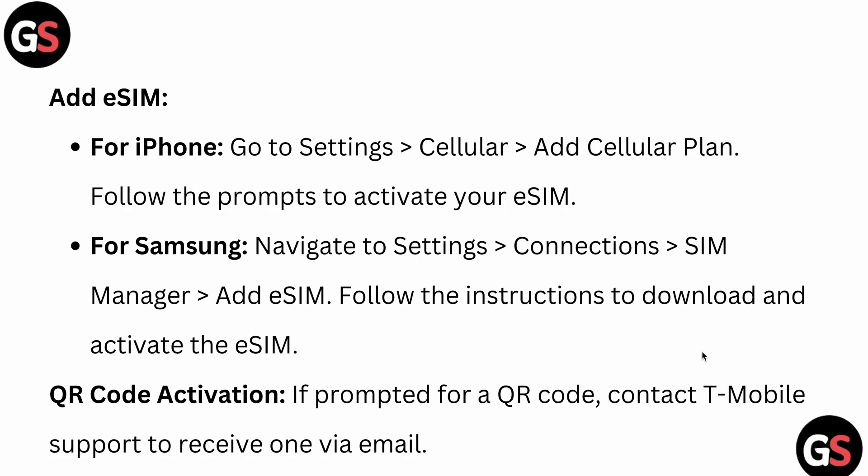To add an eSIM on iPhone, go to Settings and add a cellular plan, then follow the prompts to activate your eSIM. On Android — for example, Samsung — navigate to Settings, then Connectivity, and select Add eSIM. Follow the on-screen instructions to download and activate the eSIM. If prompted for a QR code, contact T-Mobile support to receive one via email.